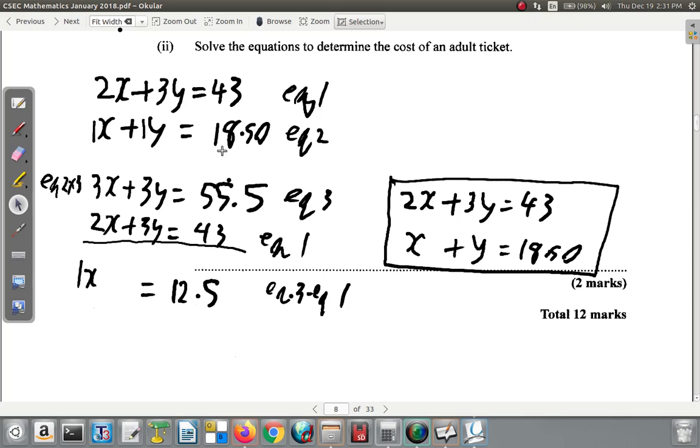Then you're asked to solve the equations to determine the cost of an adult ticket. So using elimination, we multiplied equation 2 by 3, so that we have a 3Y up here and a 3Y down here to subtract. Then 3Y minus 3Y is no Y. Y is gone, it's eliminated. Eliminate means to wipe out, to get rid of. No Ys. 3X minus 2X gives you 1X. 55.5 minus 43 gives you 12.5. So the cost of an adult ticket is $12.50.